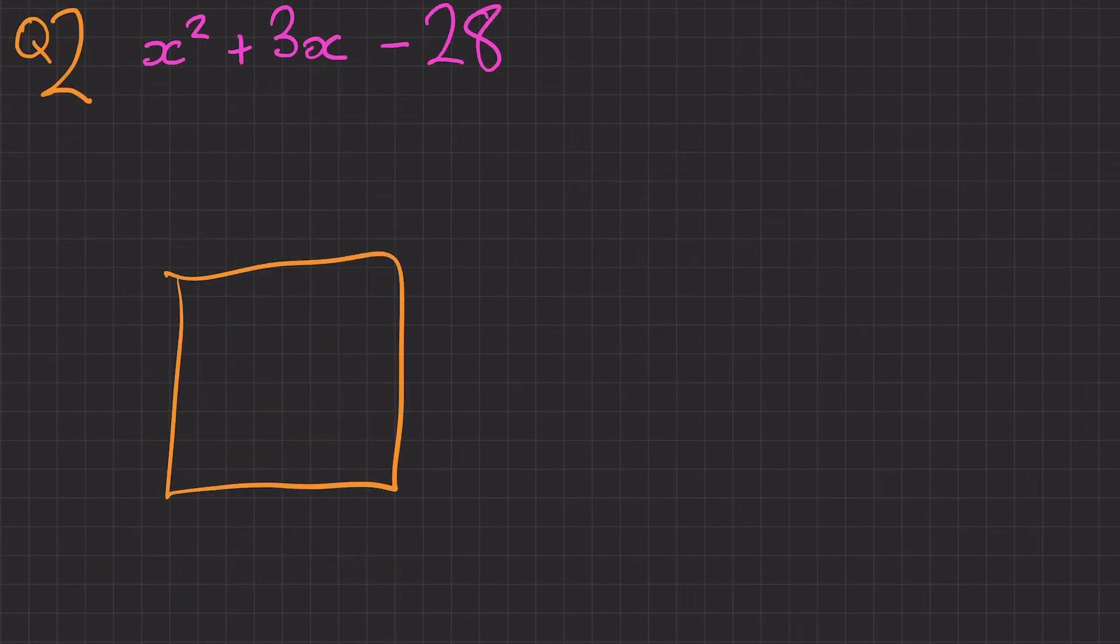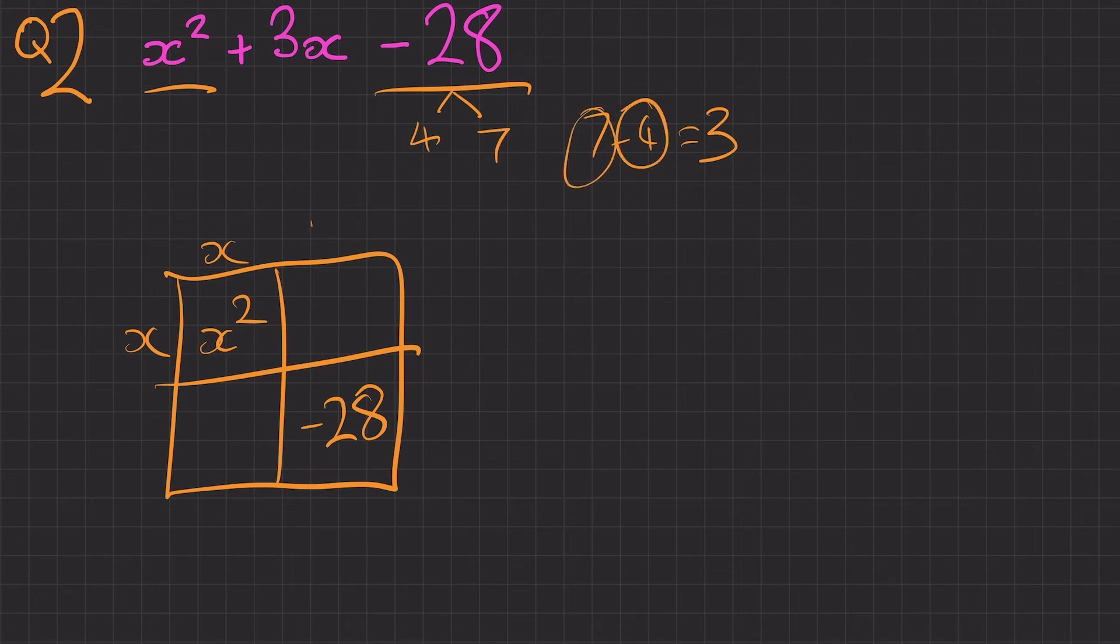Question 2. I'm going to draw my grid out. x squared minus 28. A bit of a tricky one. Well, x times x equals x squared. Minus 28. We could have 4 lots of 7. Well, 7 take away 4 equals 3. So we've got 7 and minus 4, plus 7, minus 4, plus 7x, minus 4x. Brilliant, that works. Therefore, we're left with x plus 7 and x minus 4.